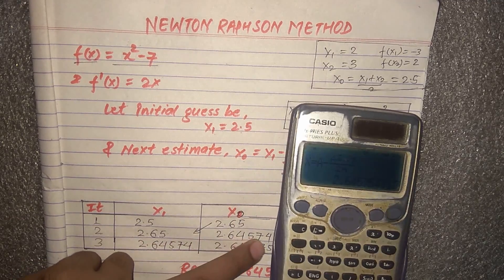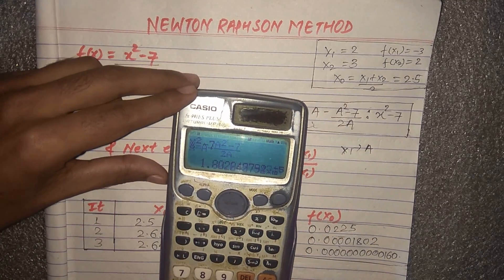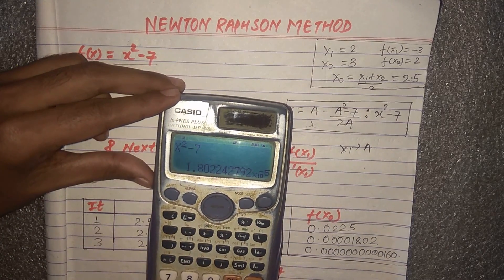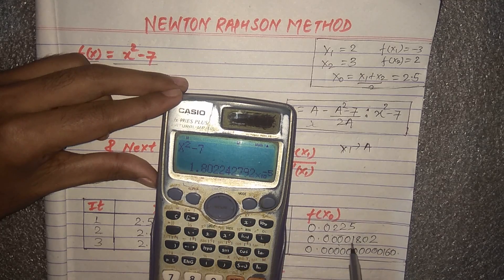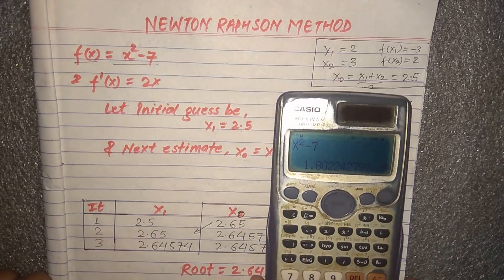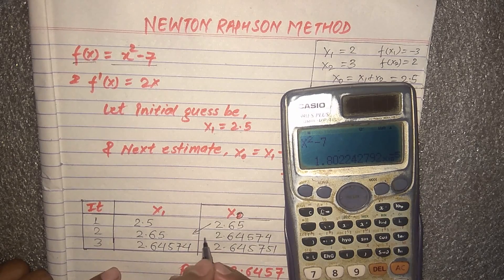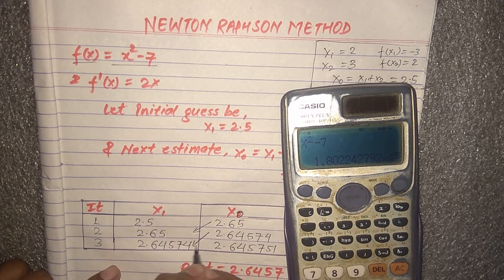Again we get 2.64574 and the functional value 1.80 × 10⁻⁵, which equals 0.0001802. In the same way, the value here is placed here.